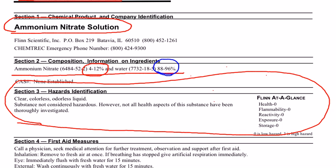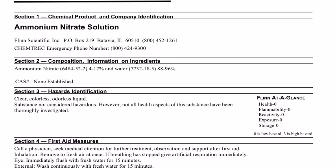Over here on the right, you'll see an area that tells you 'Flynn at a glance.' Most chemicals have this printed right on the bottle, where a 0 means very low hazard — not no hazard, because no chemical is completely hazard-free — and a 3 is very high hazard. I mentioned in the introduction that ammonium nitrate is a pretty dangerous solution, but this at-a-glance rating tells you it's not.